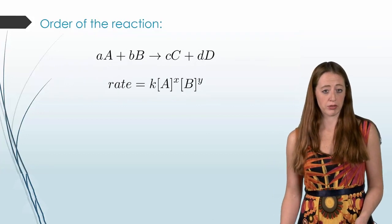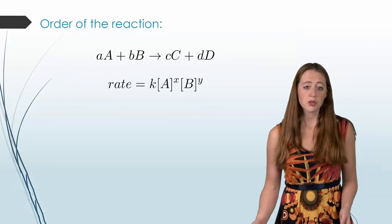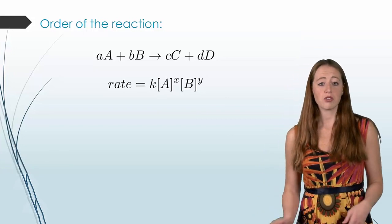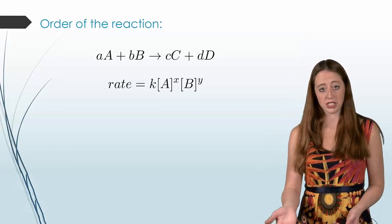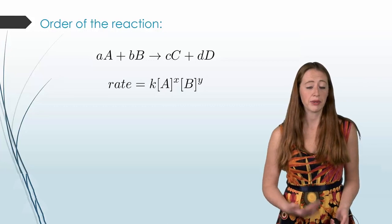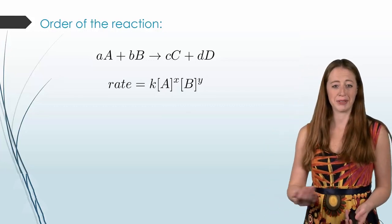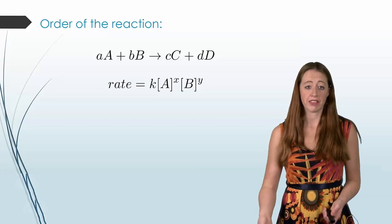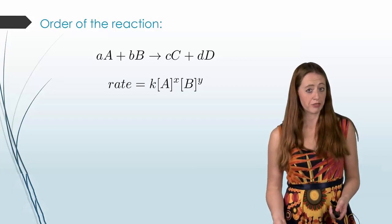So let's talk about order of the reaction first. This is some phrasing on things that we have already talked about. Let's say that we have a very generic reaction, which I have here. And we have a very generic rate law to go along with it, which I have here. If we want to talk about the order of things, here's how the phrasing works.